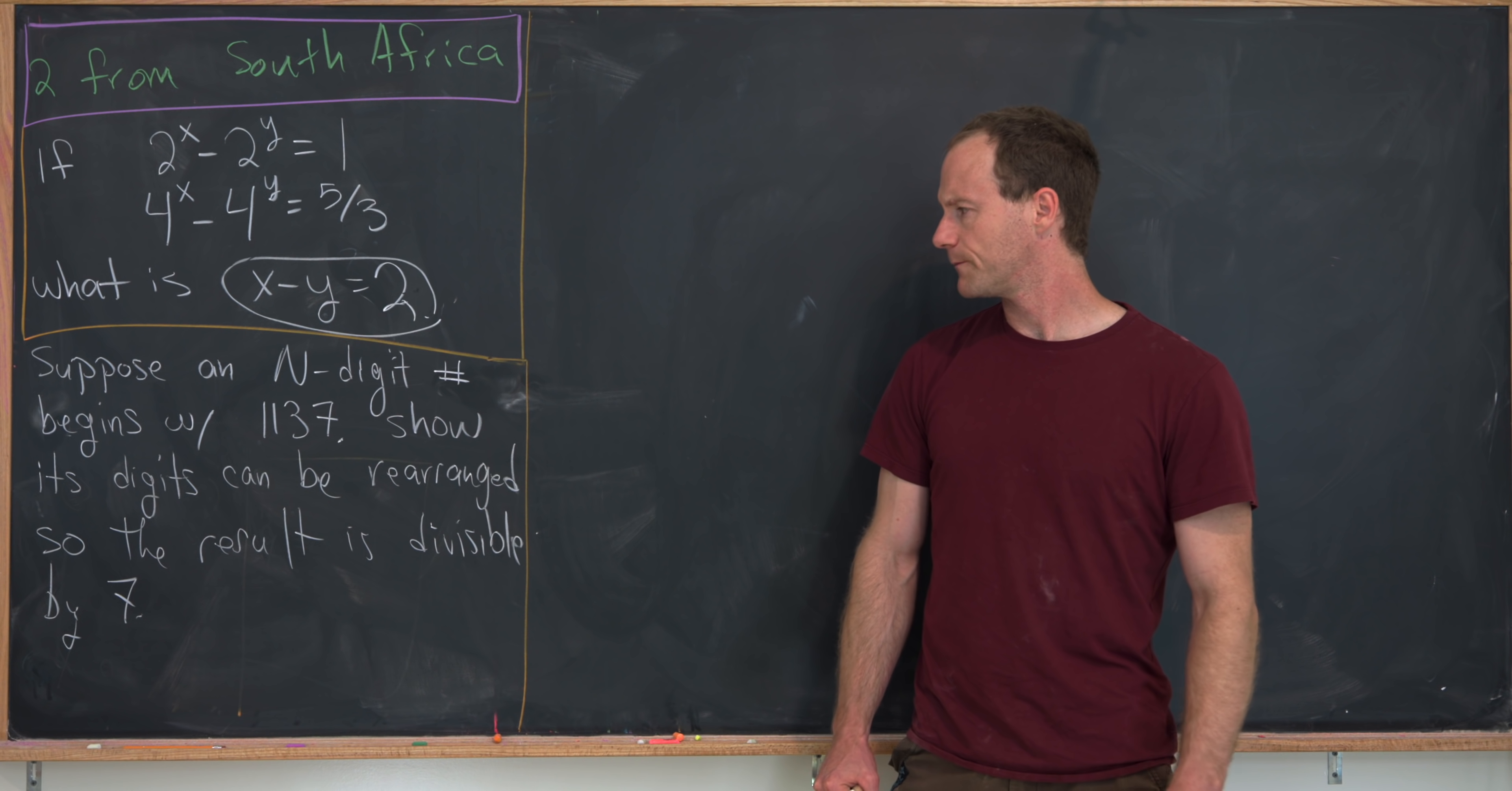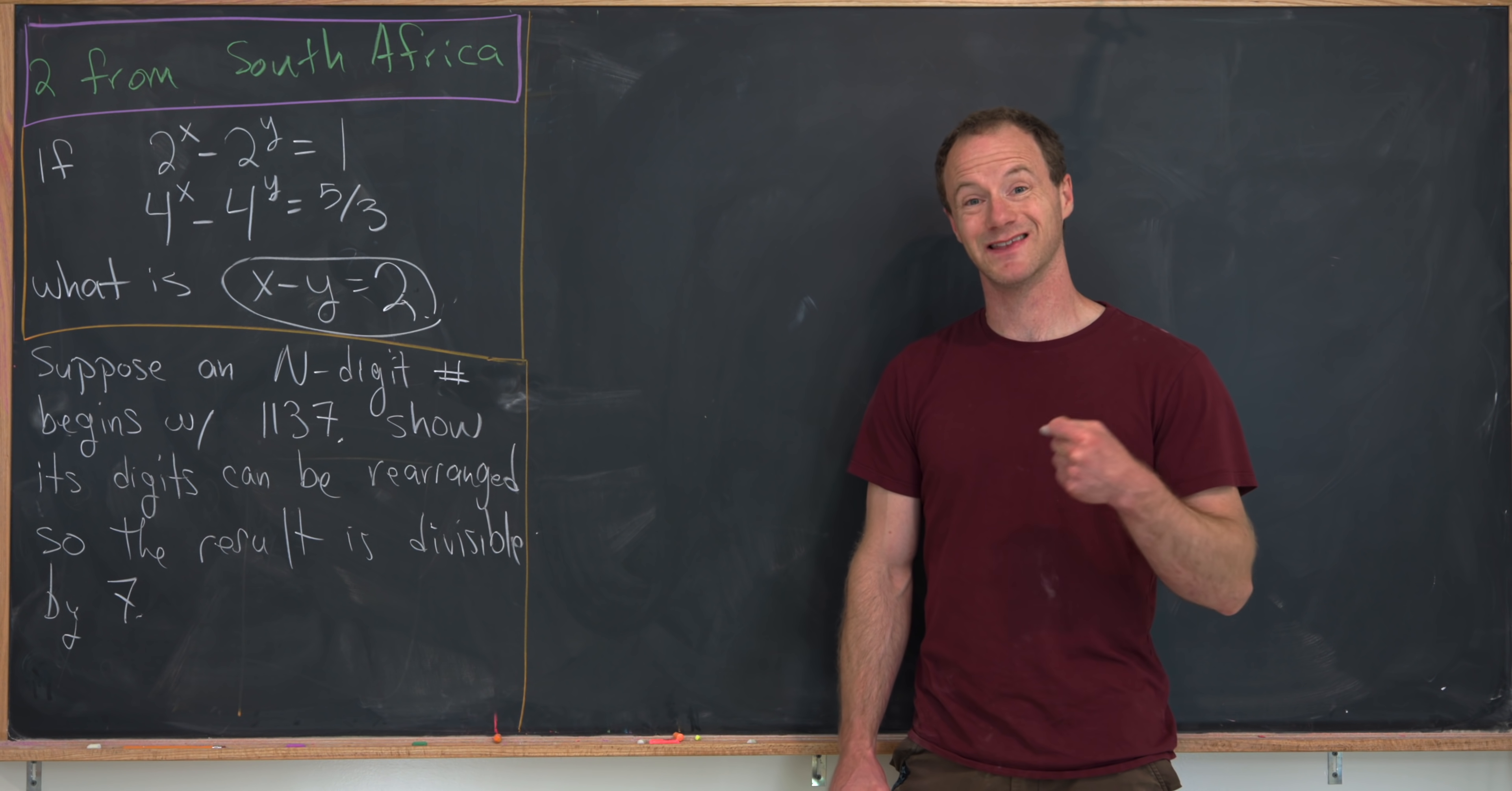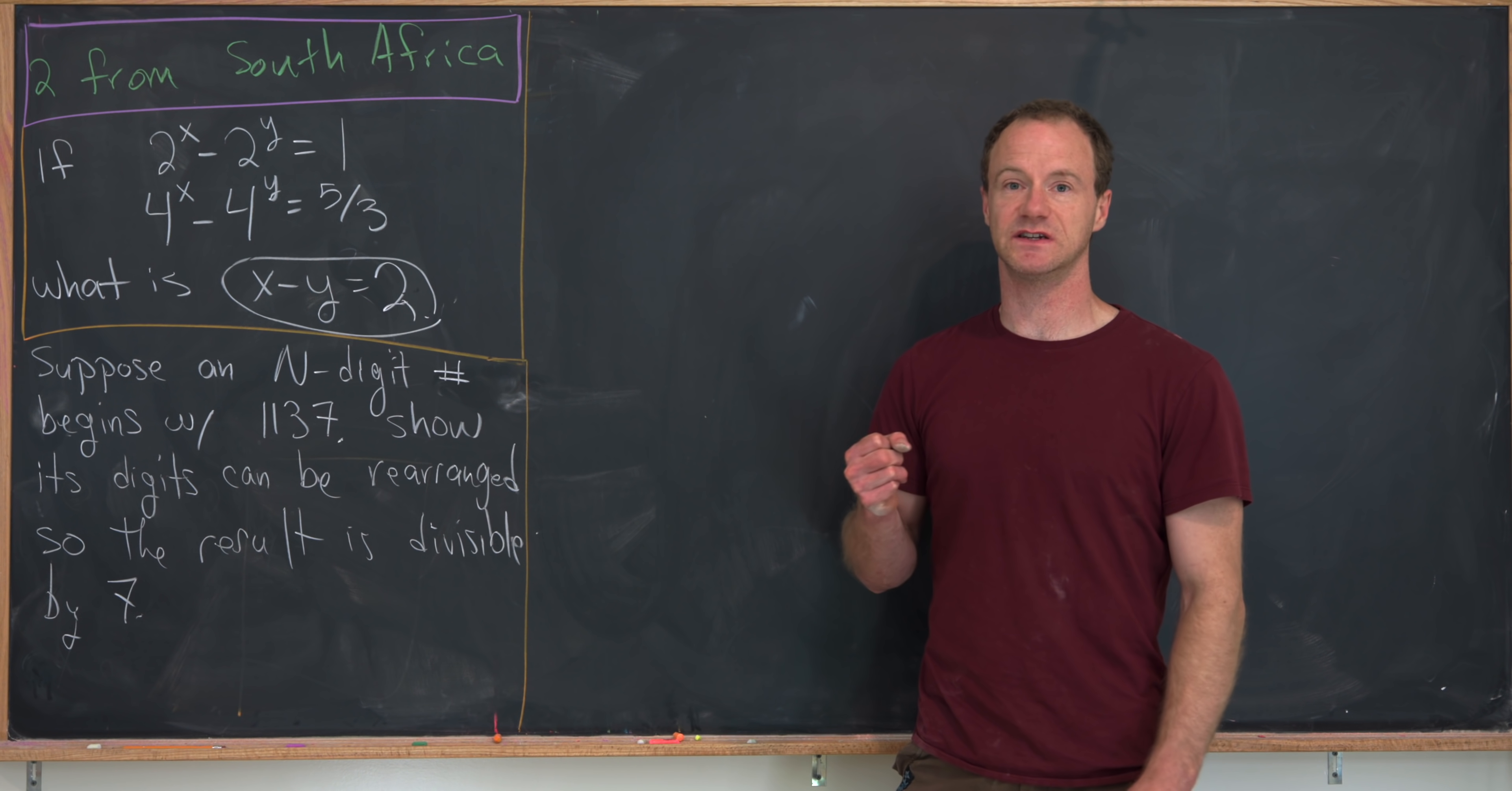And our goal is to show that these digits can be rearranged so that the result is divisible by 7. Okay, well, let's maybe keep in mind that it's easier to talk about divisibility if you have a handle on the last digits than on the first digits.